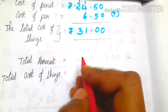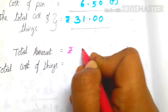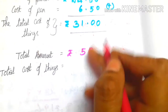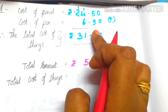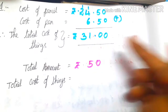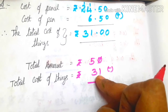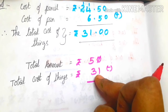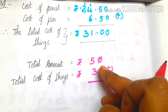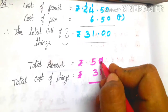Total amount equals rupees 50. You have to subtract the amount to find the balance. So 50 minus 31 rupees.